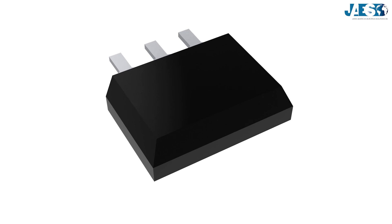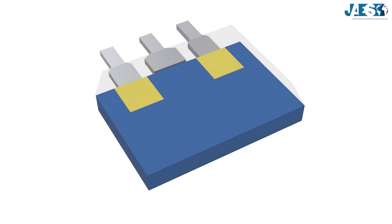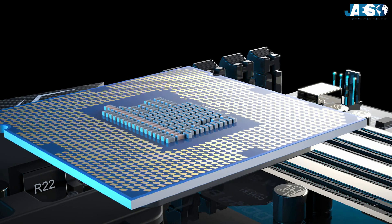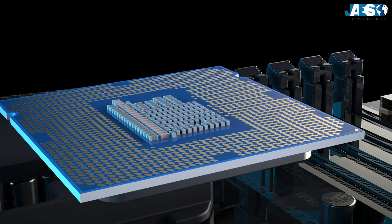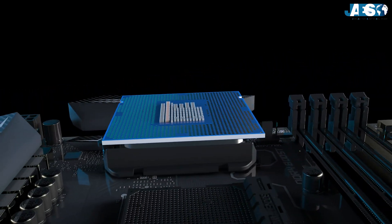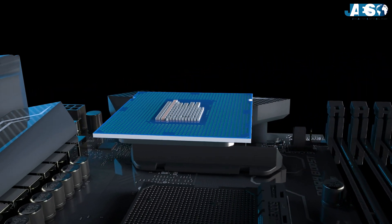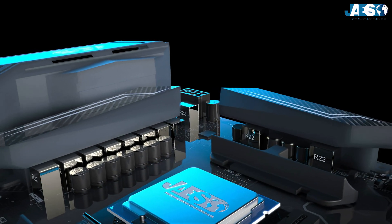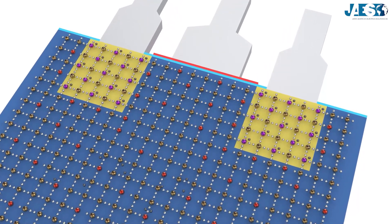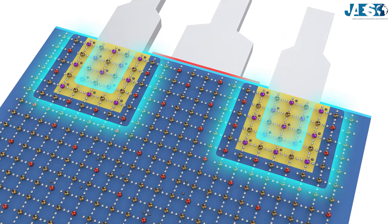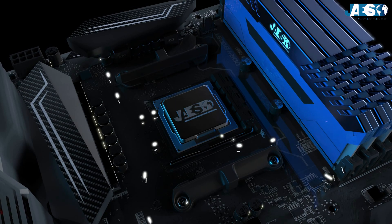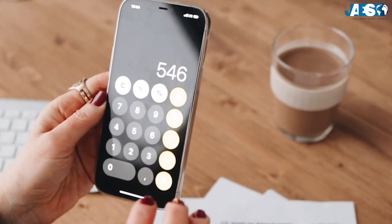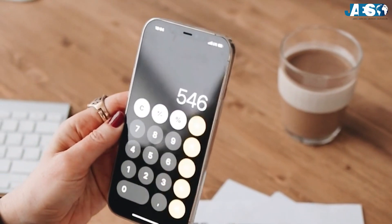The latter in particular, in the MOSFET version, is the primary component for the realization of the central processing unit, which we all know as the CPU. In this video, we will explain how a CPU is made, how it works, and why it is the basis of every digital electronic device.